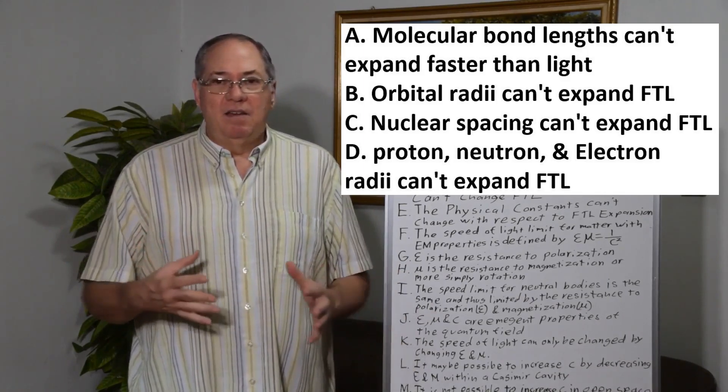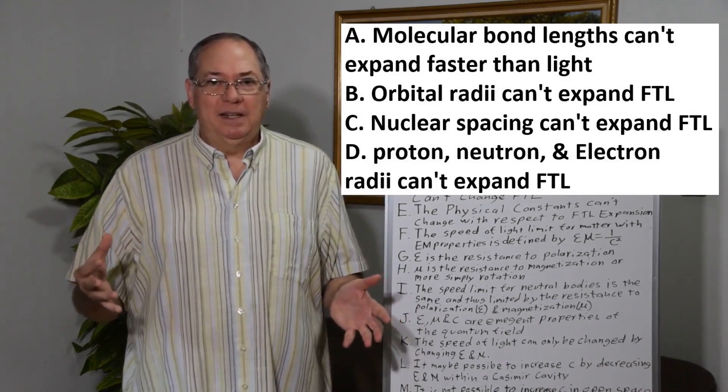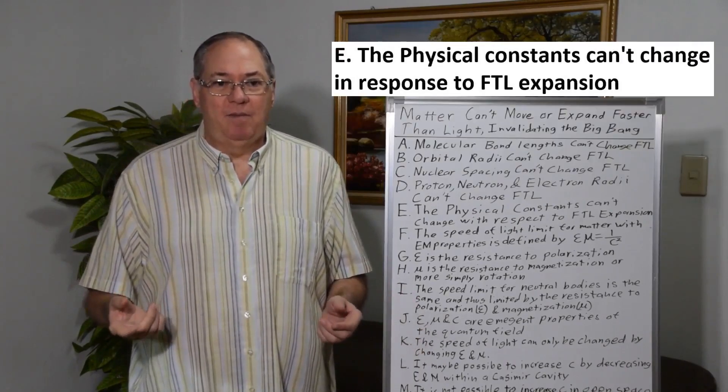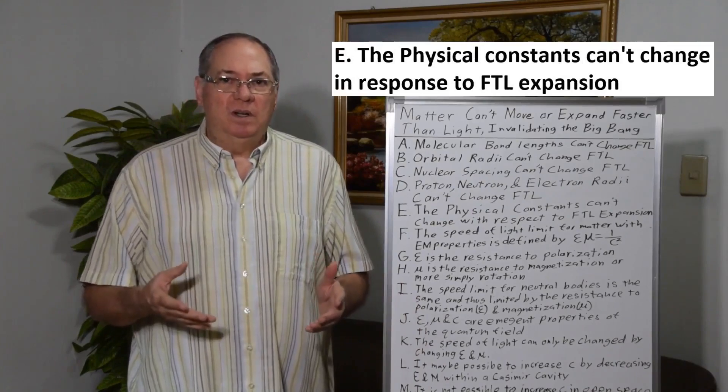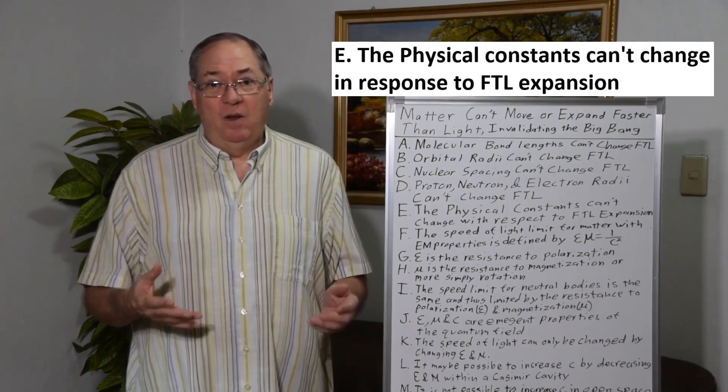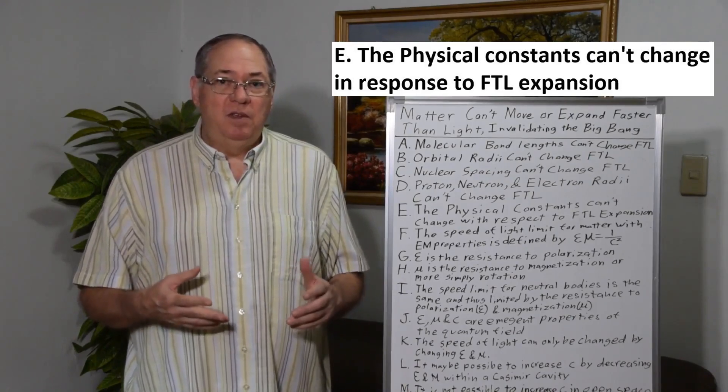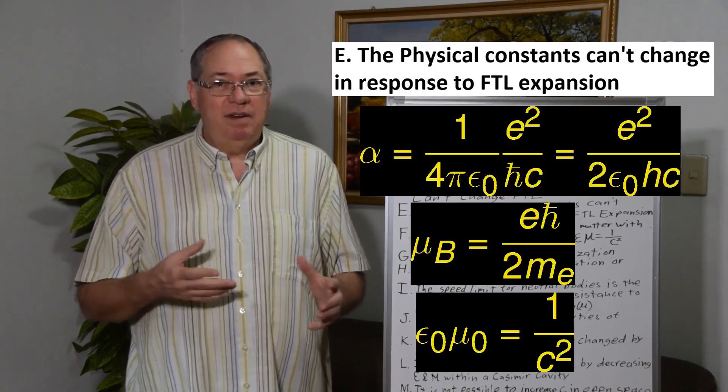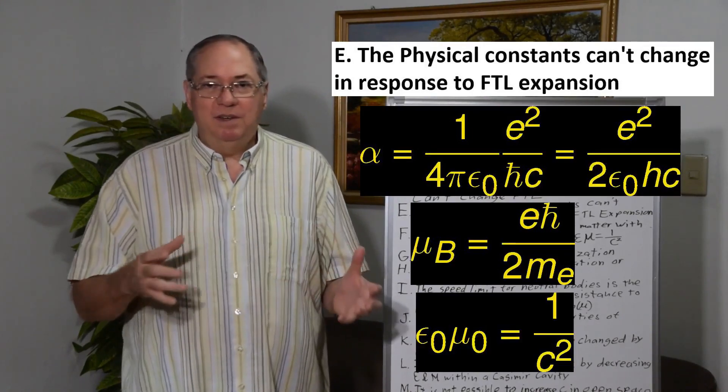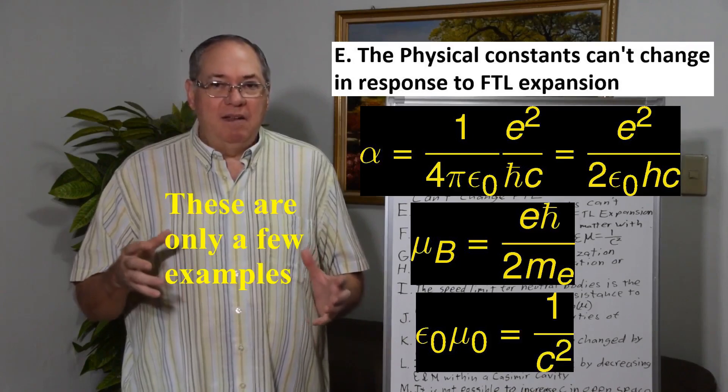So all these particles and their conglomerates, they're not expanding either in that local region of space, which makes the idea of a universal space expanding everywhere even more ridiculous. And it's even worse that I say you can't expand faster than light, but it can't really expand at all because if you look at the physical constants, every physical constant is related to other physical constants.